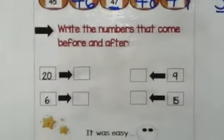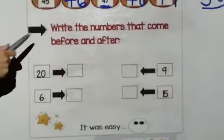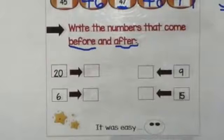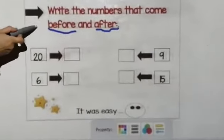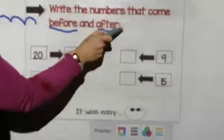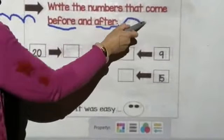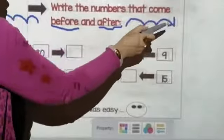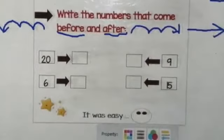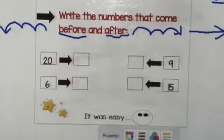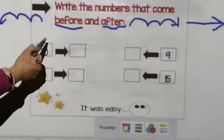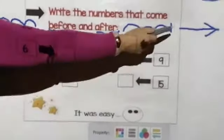Now, next question. Write the numbers that comes before and after. Numbers comes before means backward. And the numbers that comes after, we're going to find the item going forward. Before means backward. Here, it's going backward or forward. Let's see. Is it going backward or forward?